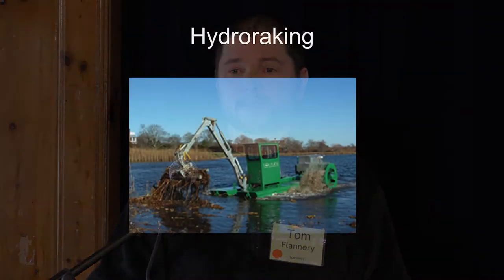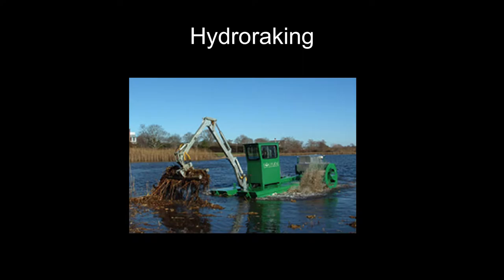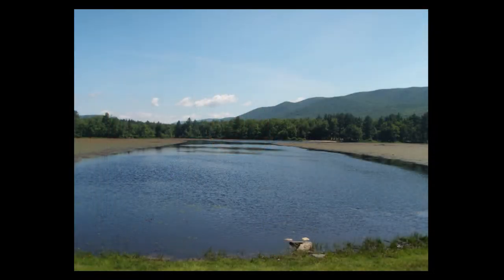The method we used there is called hydro raking — a mechanical method, really effective for plants like lily pads and water shield that have a good root structure and a large rhizome. It's essentially a floating backhoe driven by paddle wheels, with usually an eight-foot York rake on the front that physically pulls plants out by the root system. It's pretty effective but slow — maybe at most one acre per day. As you can see in the picture on the right, we opened up some lanes and it was quite effective.